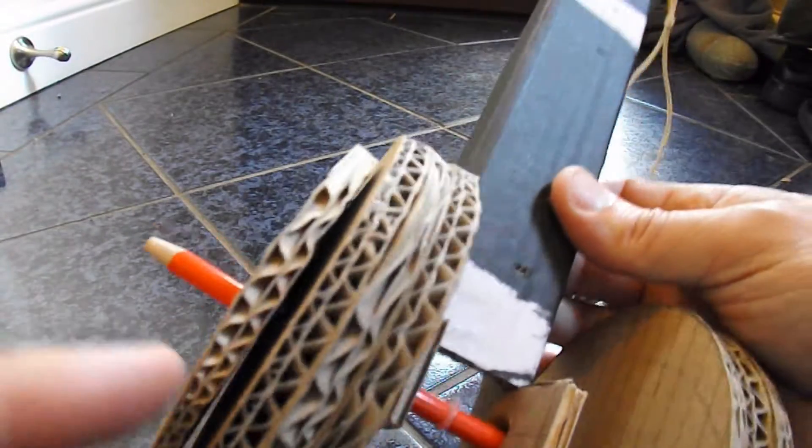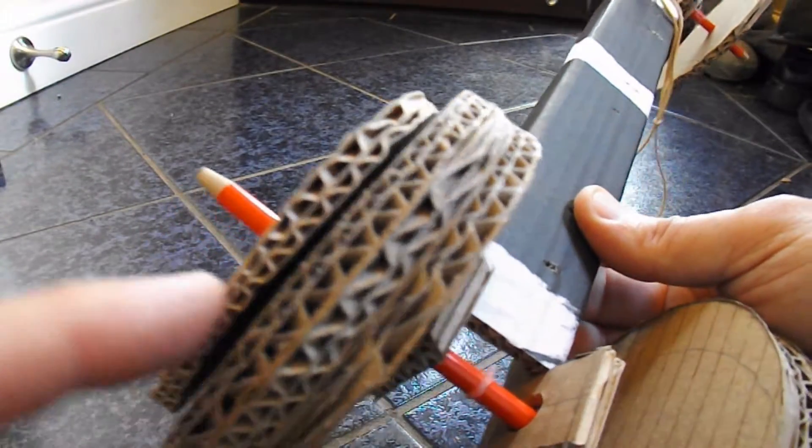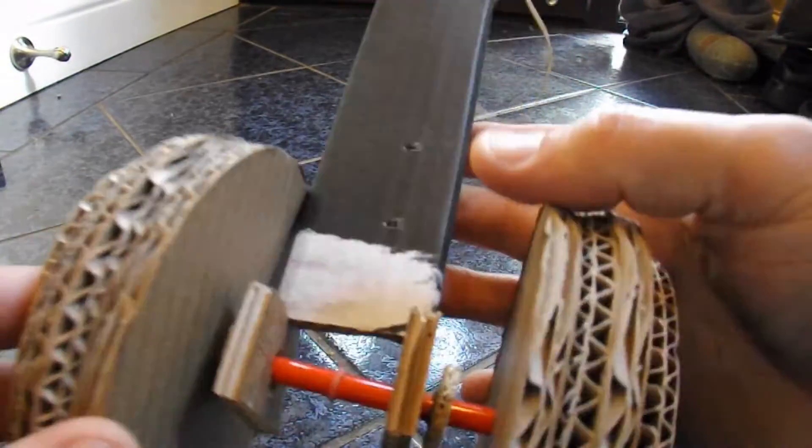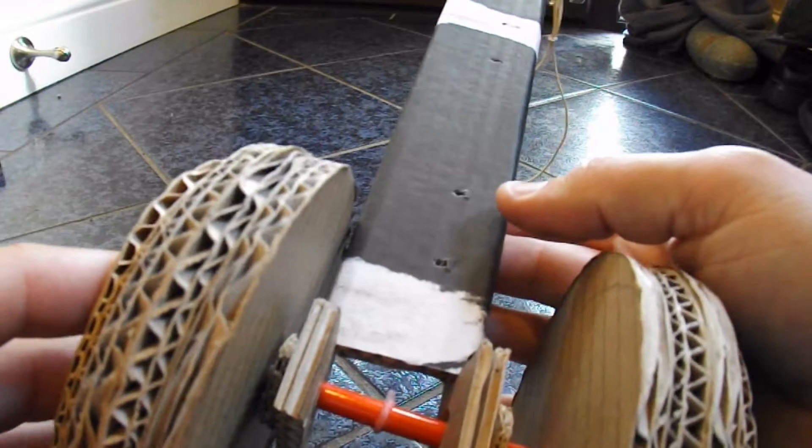At the back end I've added another disc of cardboard on either side of the wheels just to make them a little bit heavier because this car's even lighter and I was getting wheel spin again.